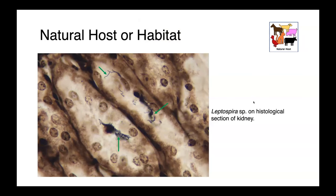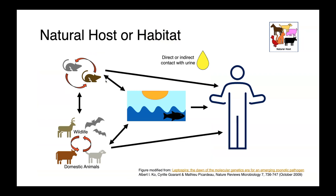In kidney tissue sections stained with silver stain, you can appreciate these organisms localized to the renal tubules — their primary site of colonization. We find Leptospira in many animal species. Classically, we think of it in rats and other rodents, and it can spill over into other wildlife or domestic animals, either through direct contact with infected rat urine or through contaminated water. Human infections can result from direct contact with infected animals — rats, other wildlife, or domestic animals — or through swimming in contaminated rivers or lakes.